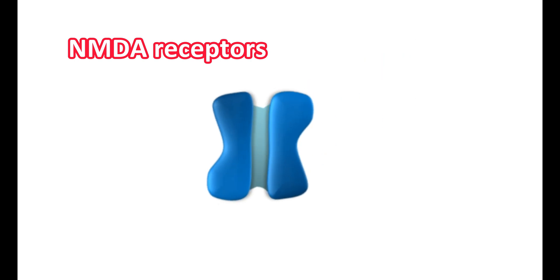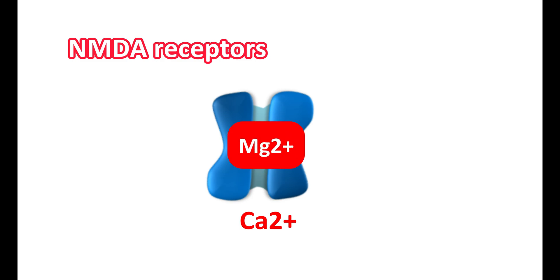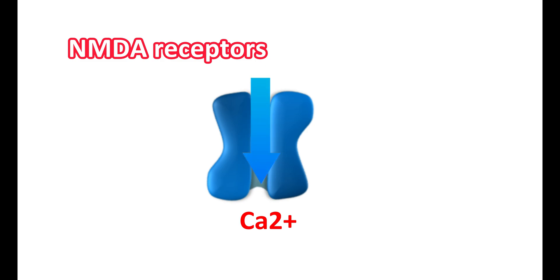NMDA receptors have several special features. As ionotropic receptors, they are permeable to calcium ions, as well as to sodium and potassium, particularly under conditions like synaptic plasticity or excitotoxicity. Importantly, the ion channels of NMDA receptors are blocked by magnesium ions under resting conditions. Upon activation of these receptors, the magnesium block is removed, allowing calcium ions to enter through the channel, producing depolarization and an excitatory response in the CNS.